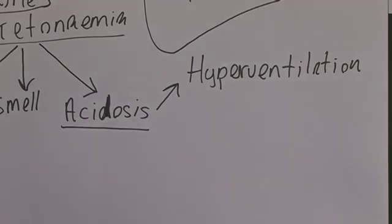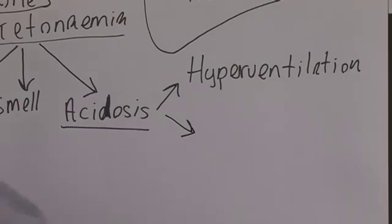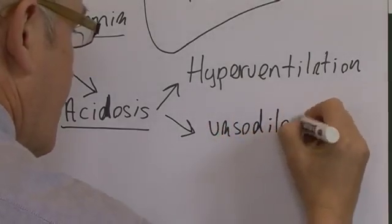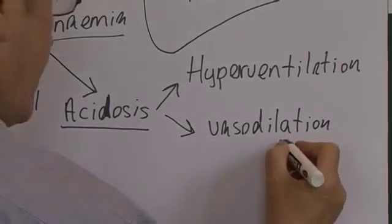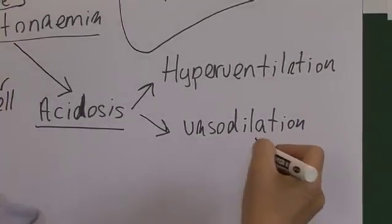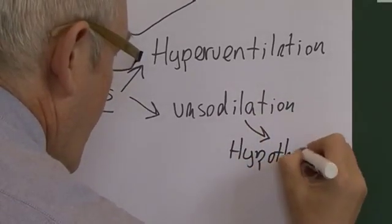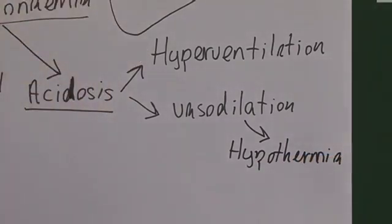And also, the acidosis affects the nerves and the peripheral blood vessels and causes a vasodilation. So there's a peripheral vasodilation. And these patients, because they're vasodilated for a period of time, tend to lose heat and they become hypothermic. There's a hypothermia.